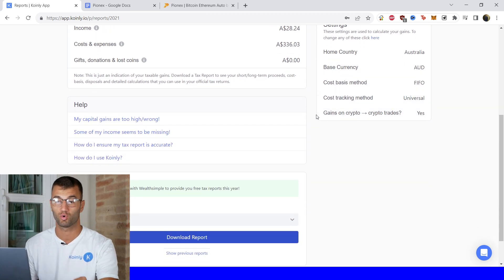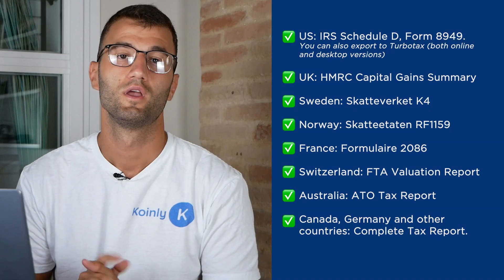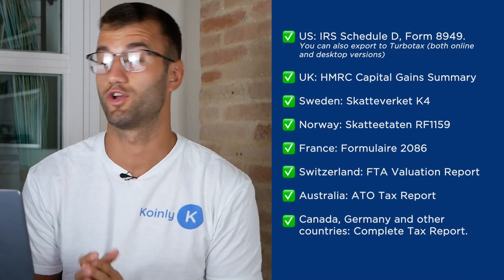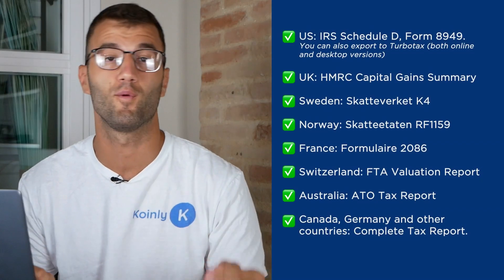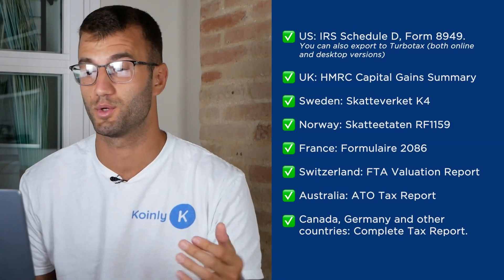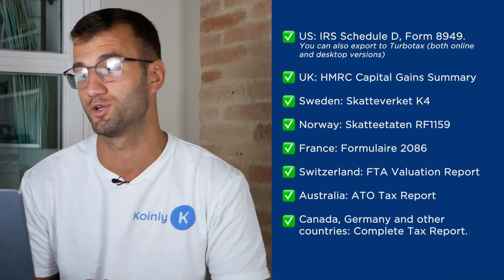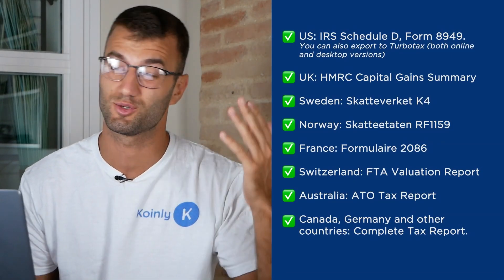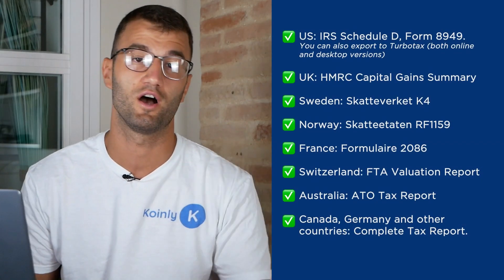Once you're happy with everything, scroll down and select a tax report appropriate for your needs. As you can see on the screen, we have plenty of different options. For the U.S., we have the IRS Schedule D Form 8949. You can also export to TurboTax in both online and desktop versions. We have reports for the UK, Sweden, Norway, France, Switzerland, Australia, Canada, Germany, and other countries.